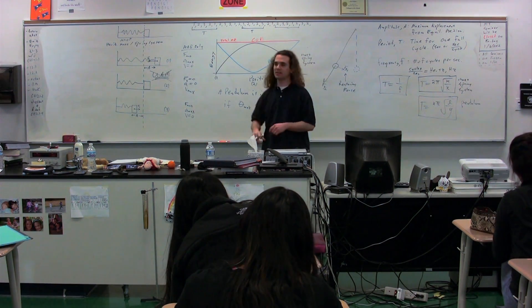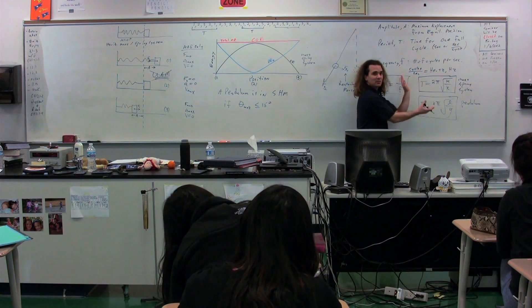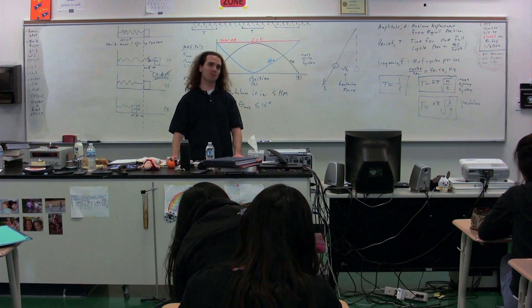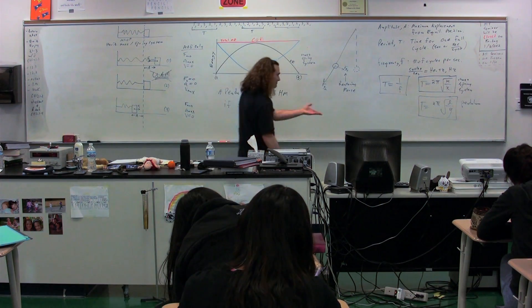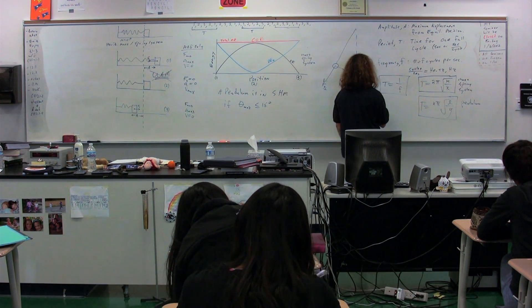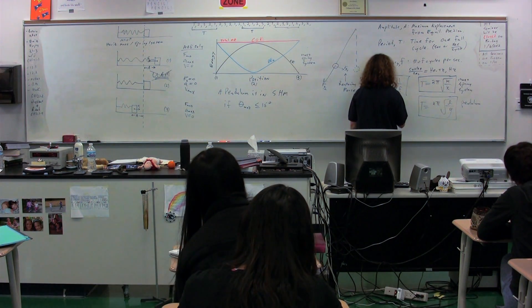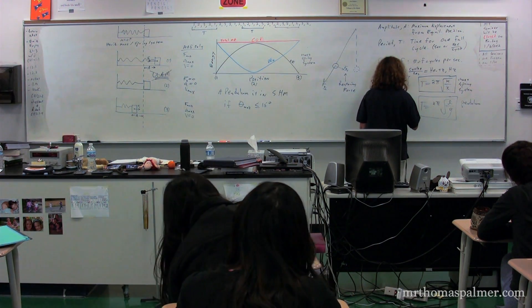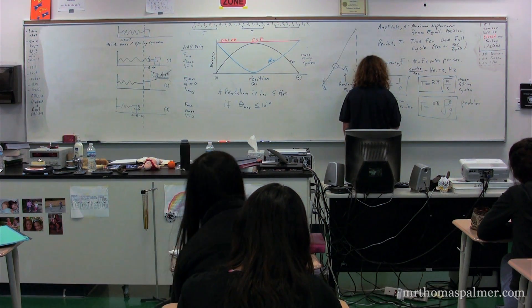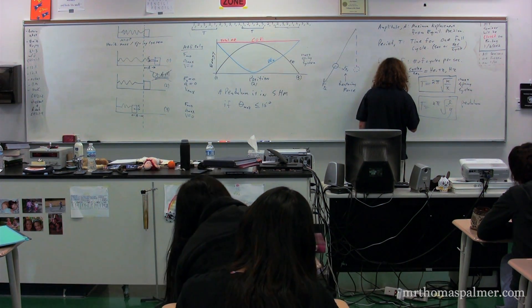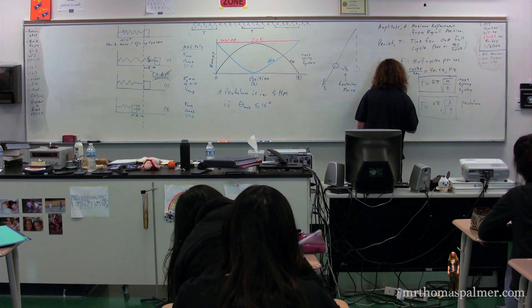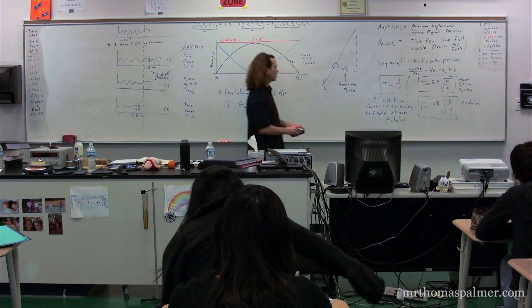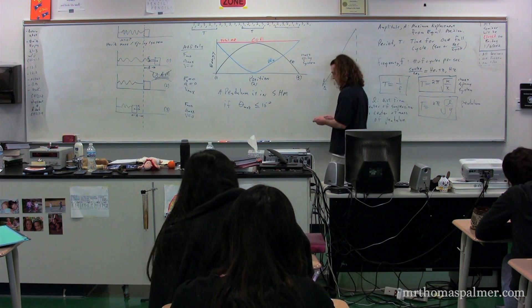A couple things. One, realize in this class I simply say these are the equations for the periods of a mass spring system and a pendulum. So in AP Physics C, we spend about 30 minutes deriving it. It's a lot more fun, but you need calculus in order to be able to do it. I do want to define l for you. l is the distance from what is called the center of suspension to the center of mass of the pendulum. So to call it the length of the string is not quite correct. It is the distance from the center of suspension to the center of the pendulum. And I will show you what exactly that means right over here.